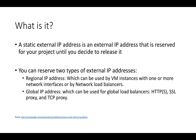A static external IP address is an external IP address that is reserved for your project until you decide to release it. When you reserve a static IP address, you get it until you let it go. It is similar to what we have in AWS — the Elastic IP address — which gives you a static IP address that you can attach to an EC2 instance. Here you get the external static IP address that you attach to Google Compute VM instances.